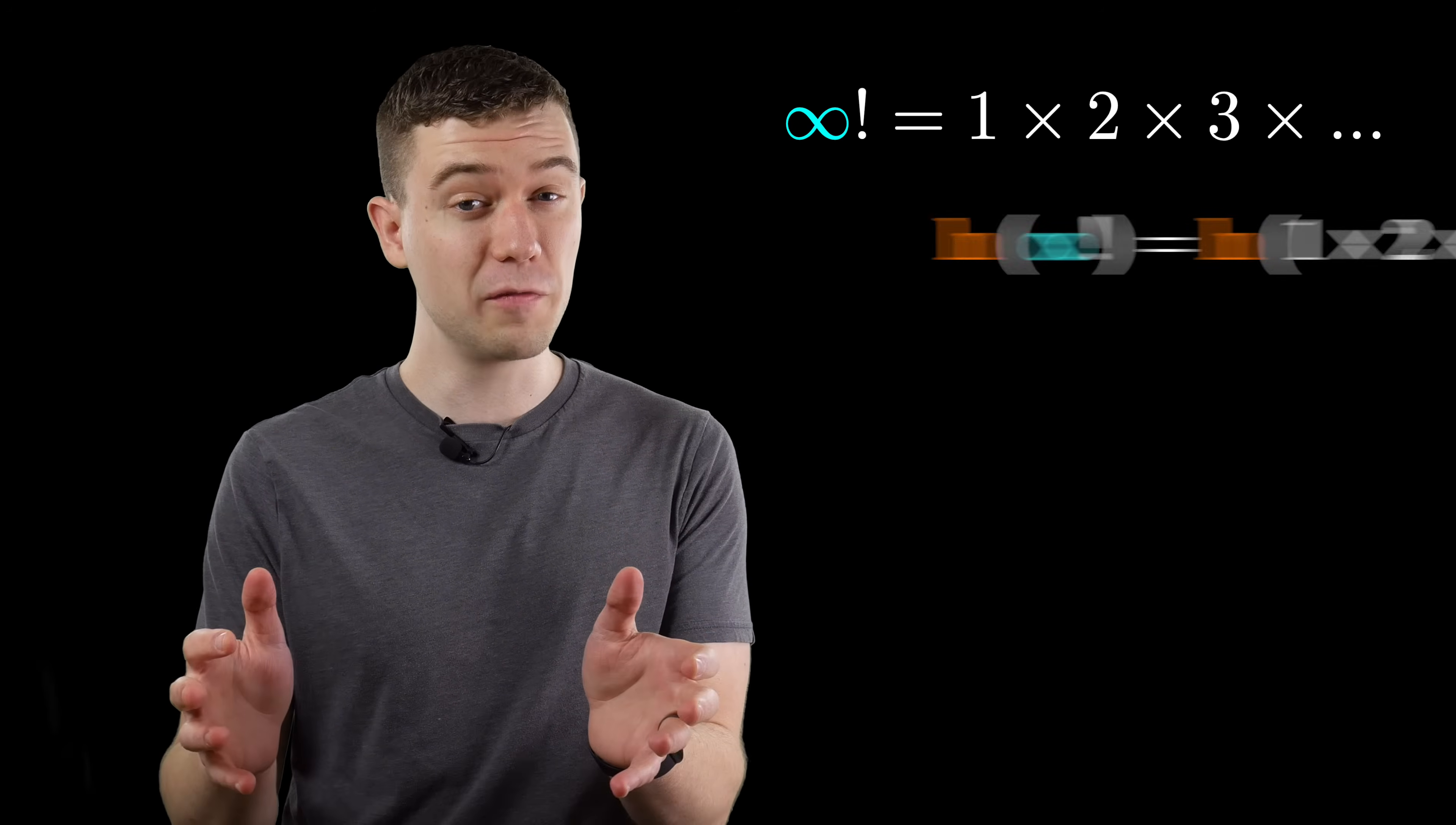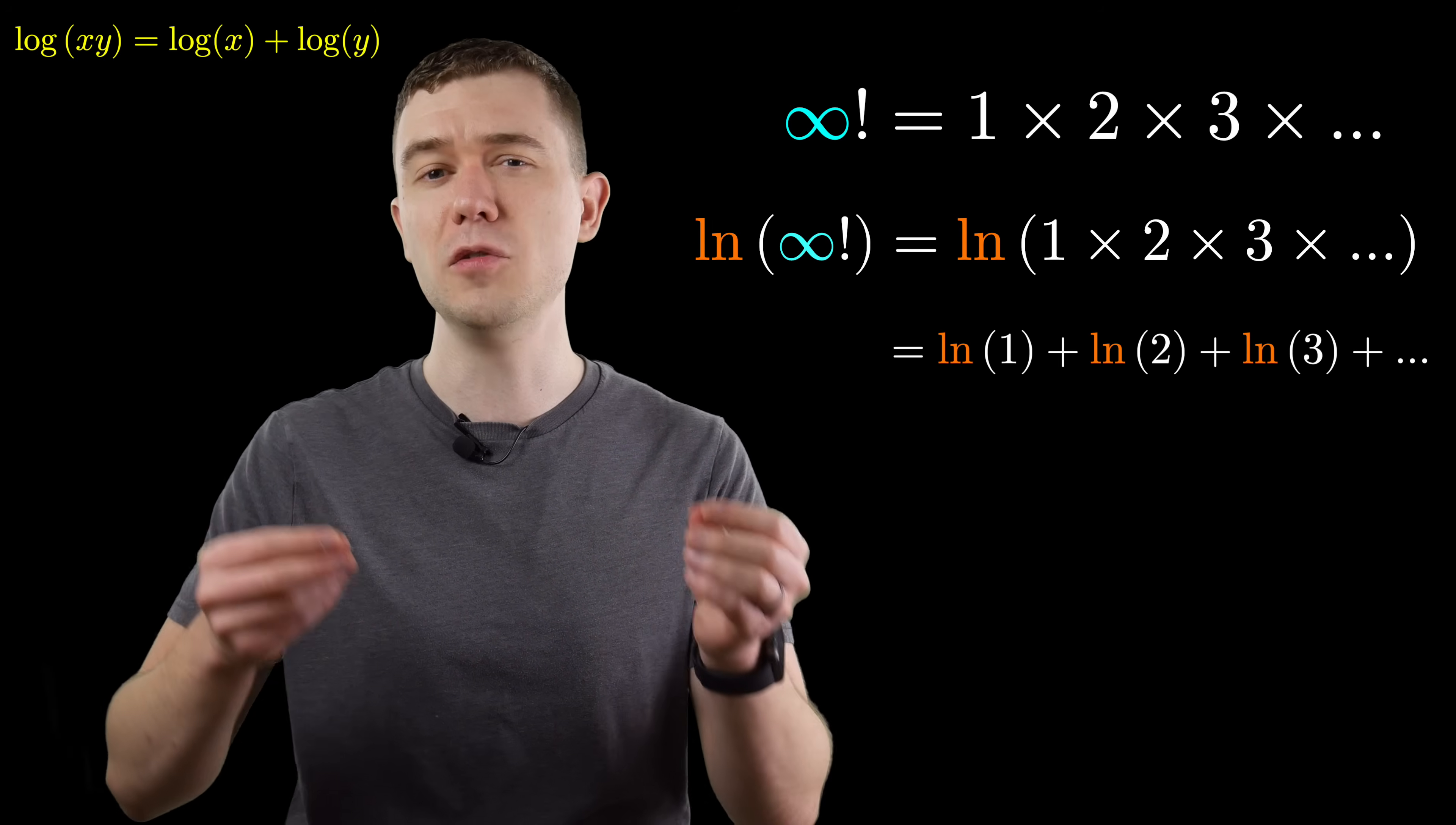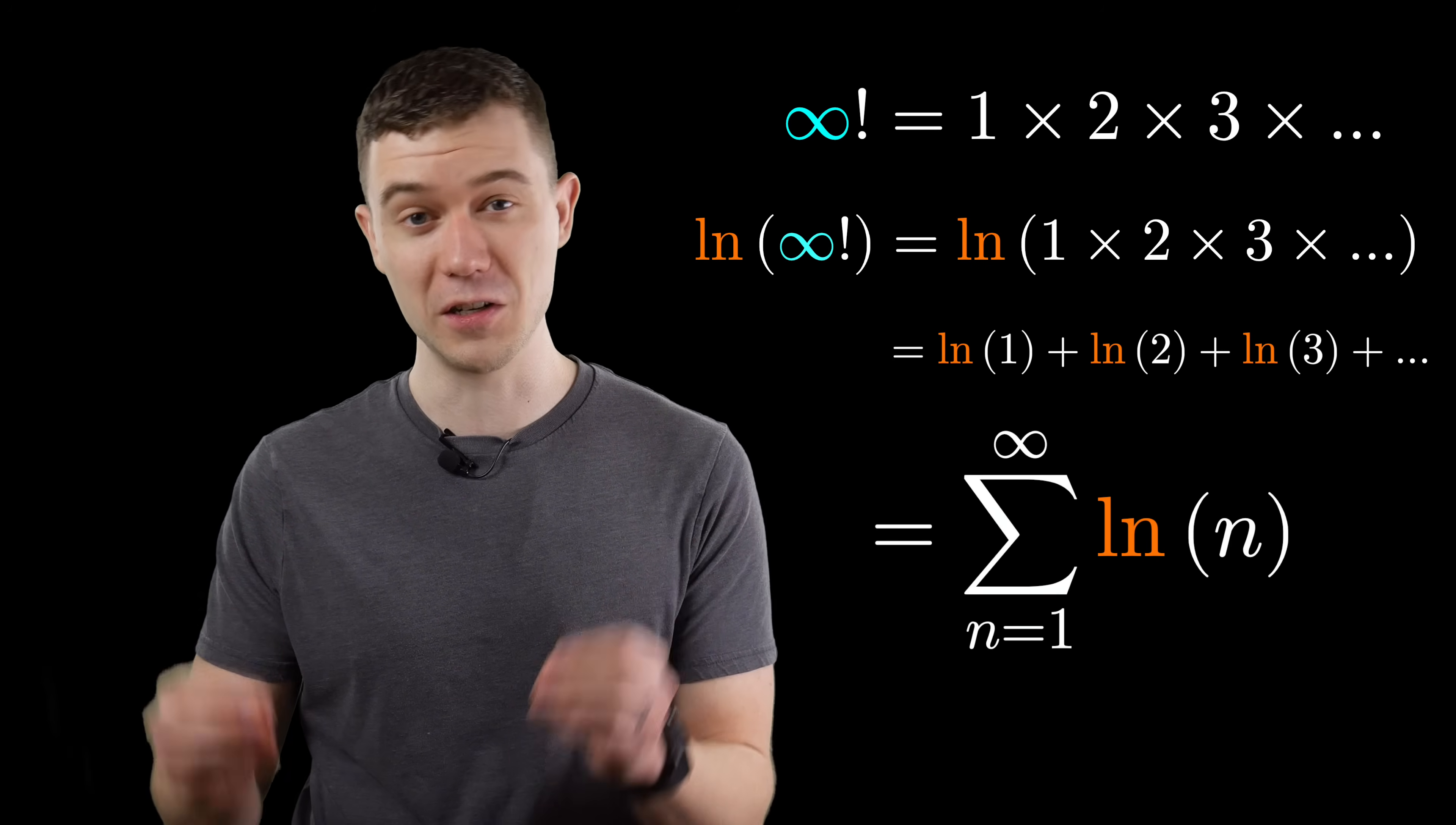Let's take the log of both sides and, assuming that we can, apply properties of logarithms to break up this log of an infinite product into an infinite sum of logarithms. This condensed summation notation looks so good, there just has to be a function that represents it. Enter the infamous Riemann zeta function.